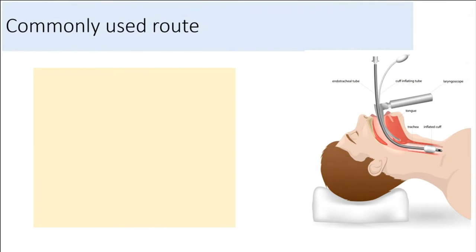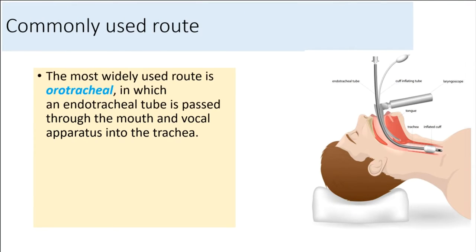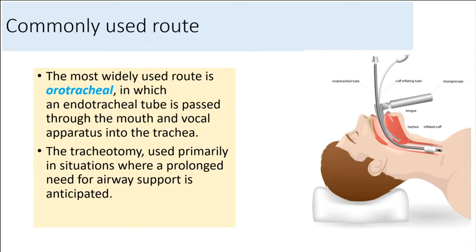The most widely used route is orotracheal, in which an endotracheal tube is passed through the mouth and vocal apparatus into the trachea. The tracheotomy is used primarily in situations where a prolonged need for airway support is anticipated.